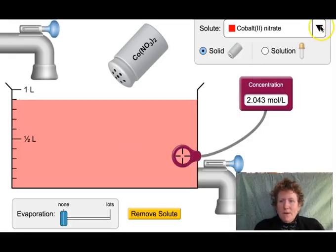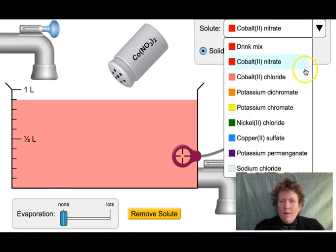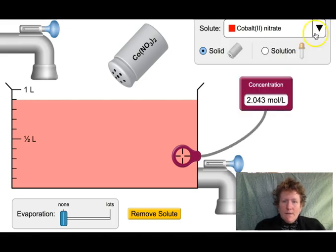Here's just a reminder, you can choose what compound you're using here. So the next one would be cobalt chloride and the concentration you would read right from here.